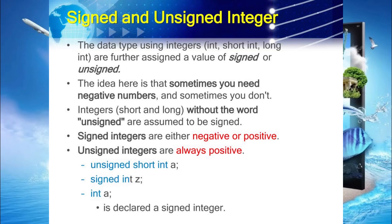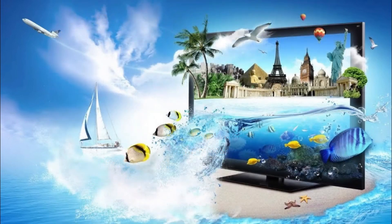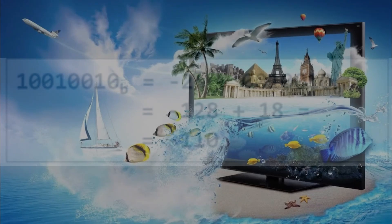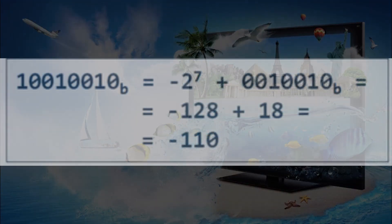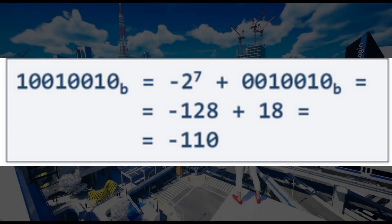8-bit signed numbers can store up to and below — like, it can store negative 128 and positive 127. An 8-bit unsigned number can store up to 255, but it has to be positive — it cannot be a negative number. 16-bit can store up to 32,767 or down to negative 32,767, and 65,535 for unsigned numbers.